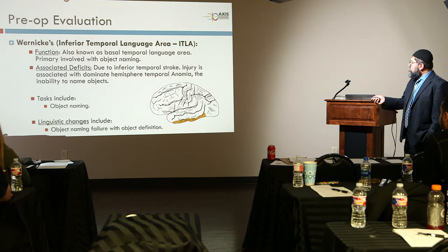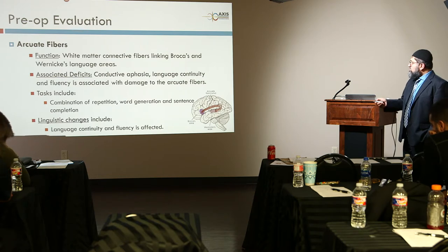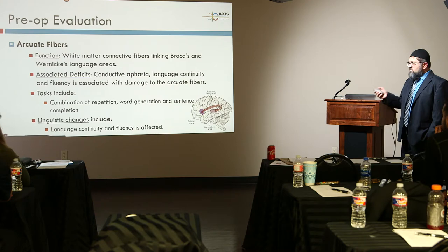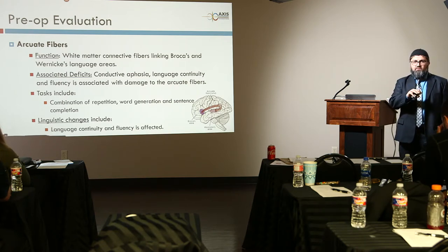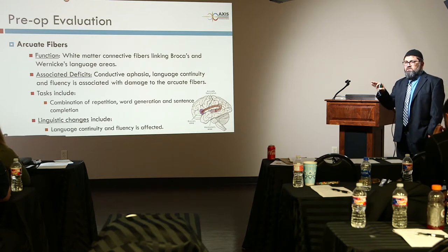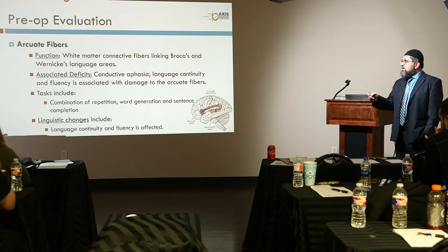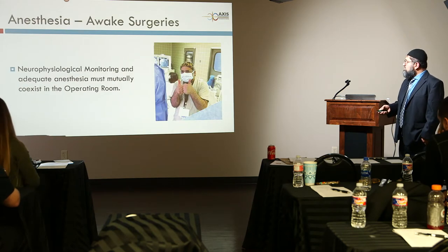The inferior temporal gyrus is responsible for object naming; any damage results in object naming failure. The arcuate fibers connect all these areas together. The main point is to identify Broca's area and its three sub-parts, Wernicke's area, STG, and angular gyrus, and then follow the connecting fibers.